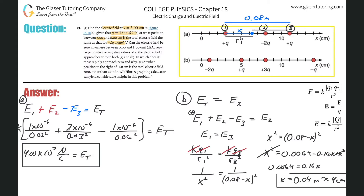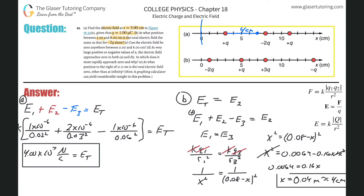So the unknown distance x equals four centimeters. That means the position is four centimeters to the right of charge one, or equivalently seven centimeters from the origin. Either way, those are the same answer.